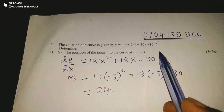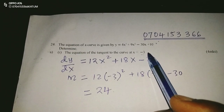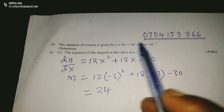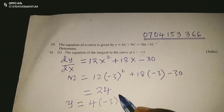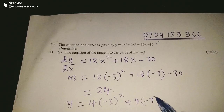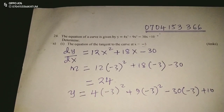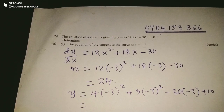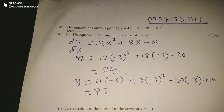We have the point where x equals negative 3. At that point we can also find the value of y using the original equation. Substituting x = −3: 4(−3)³ + 9(−3)² − 30(−3) + 10. This gives us y equals 7. So we have a gradient of 24 and the point (−3, 7) on the curve.